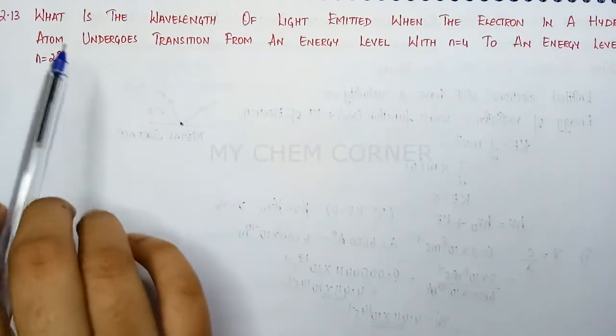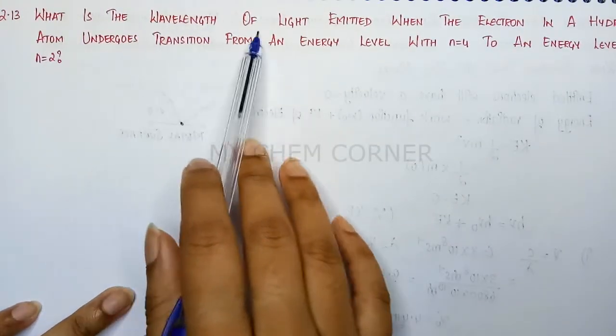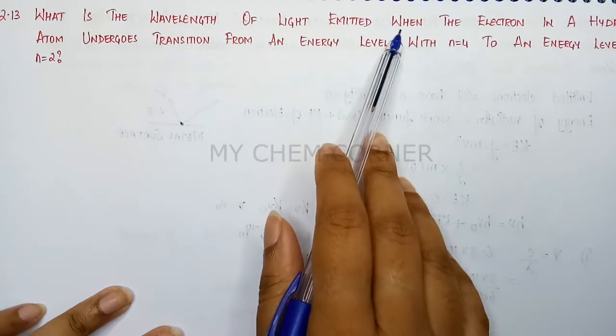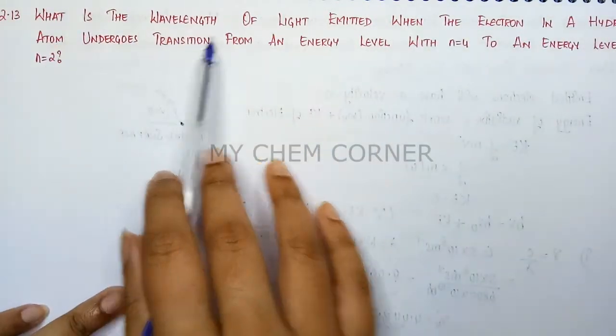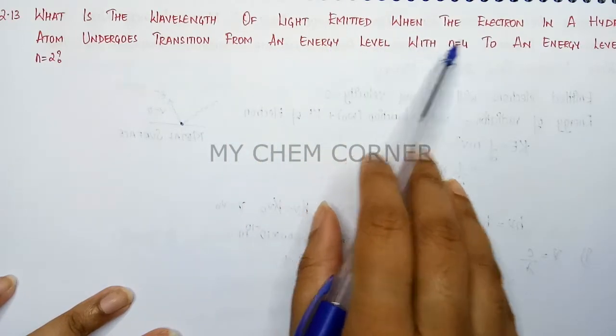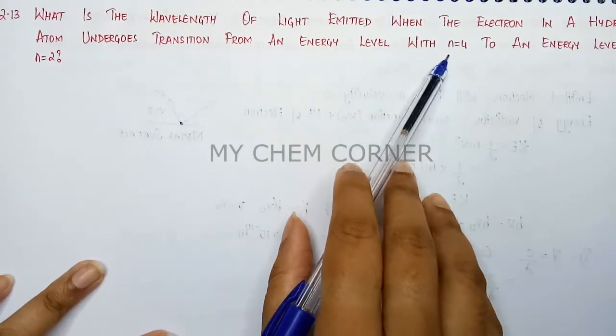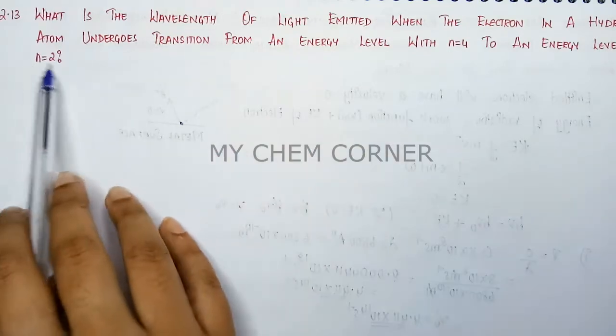Next is question number 2.13. What is the wavelength of light emitted when electron in a hydrogen atom undergoes transition from an energy level n=4 to an energy level n=2?